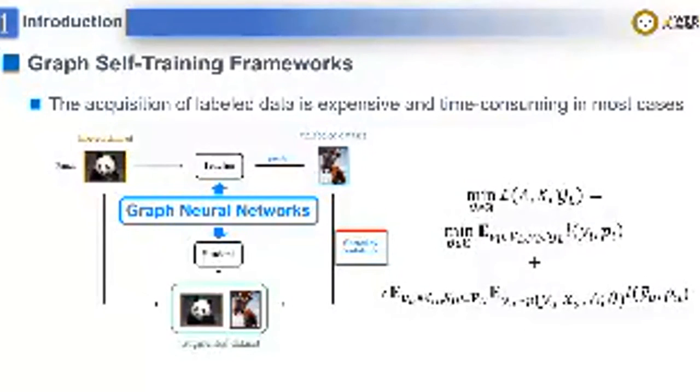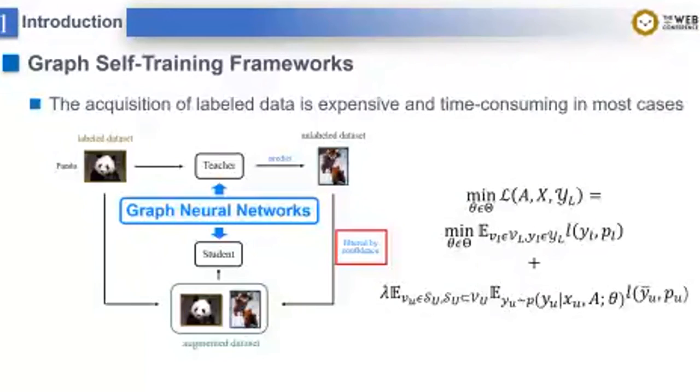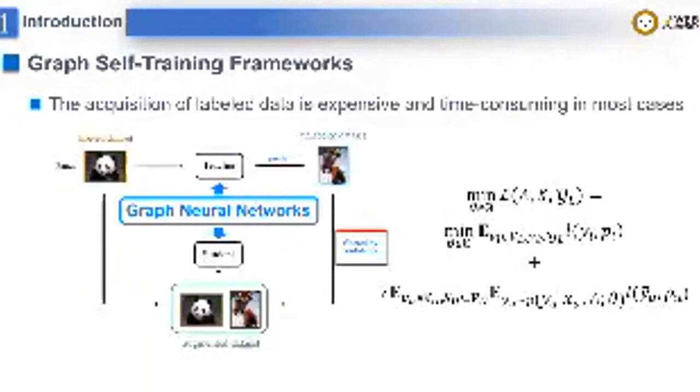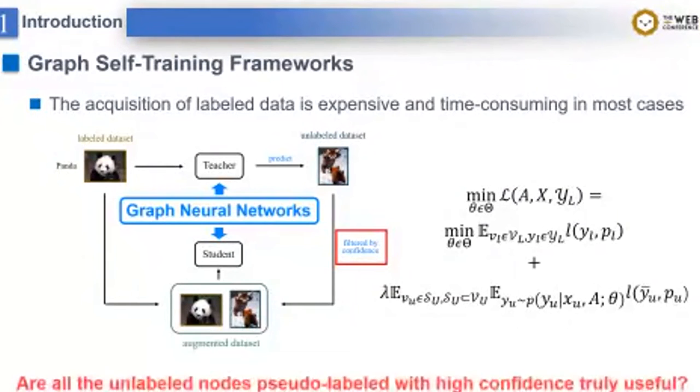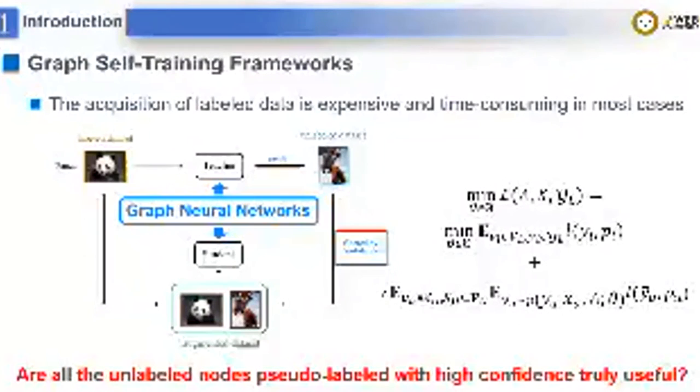However, from the perspective of information theory, high confidence means models have learned most of information from labeled data. Then, if we add the same information to the dataset, will it really work? Or, more specifically, are all the unlabeled nodes pseudo labeled with high confidence truly useful?